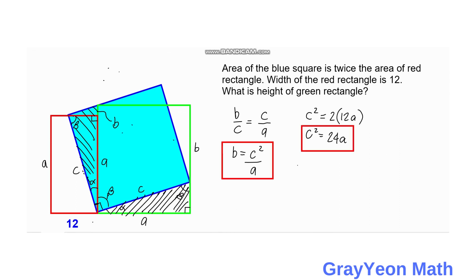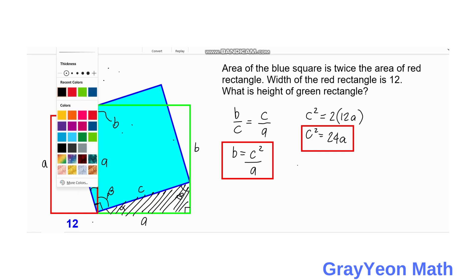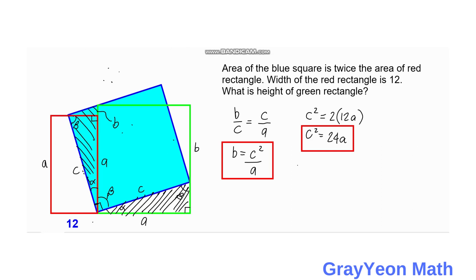Using the first equation B equals C squared over A, we substitute C squared with 24A. So B equals 24A over A. We cancel A, and we get B equals 24 units. That is our answer.